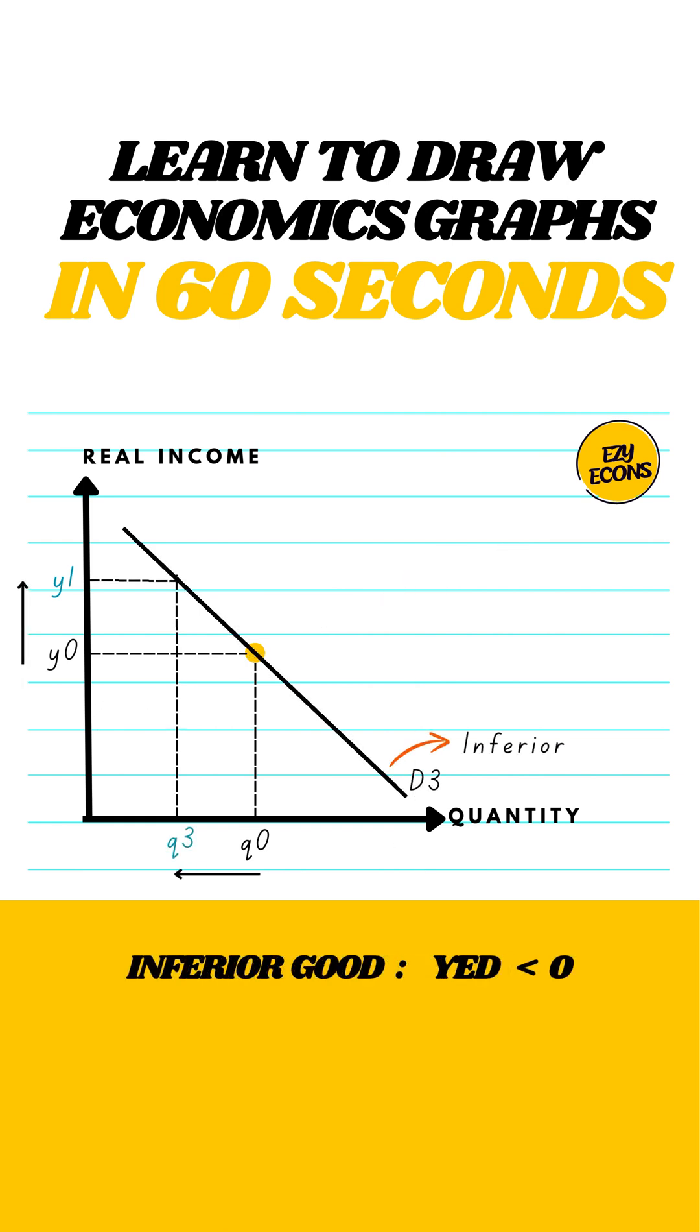Inferior goods have a YED below 0. When income rises, demand falls. So the curve slopes downward.